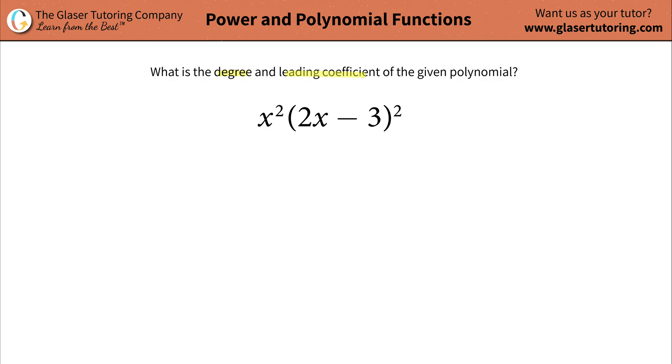What is the degree and leading coefficient of the given polynomial x squared times 2x minus 3 squared? All right, so the first thing is, in order for me to figure out the degree and the leading coefficient, I kind of have to get this thing into a polynomial form.